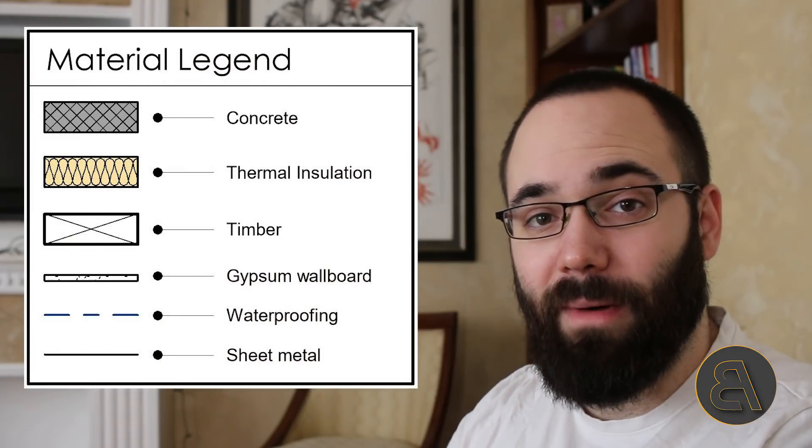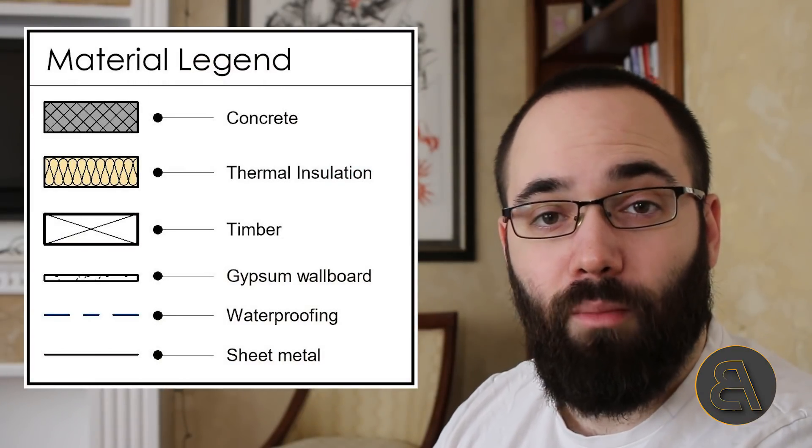What's going on guys, Balkan Architect here. In today's video we're talking about material legends in Revit. Material legends are an important part in architecture, especially when it comes to sheets and presenting your projects. It's always useful to have that little material legend off to the side that gives the reader of the project or plan a better idea of what they're looking at and what the materials represent.